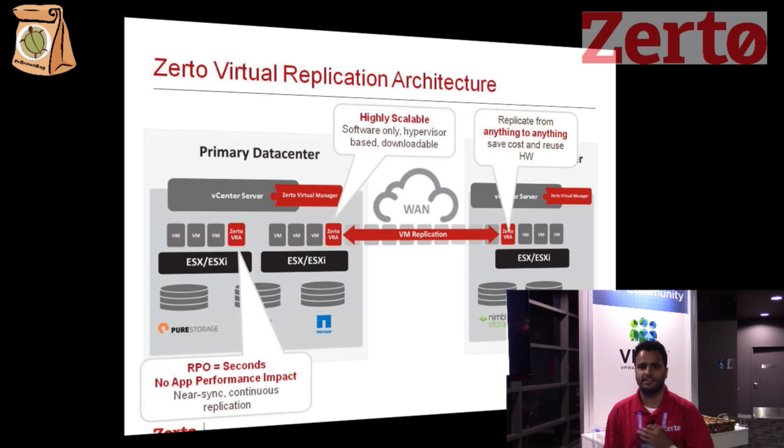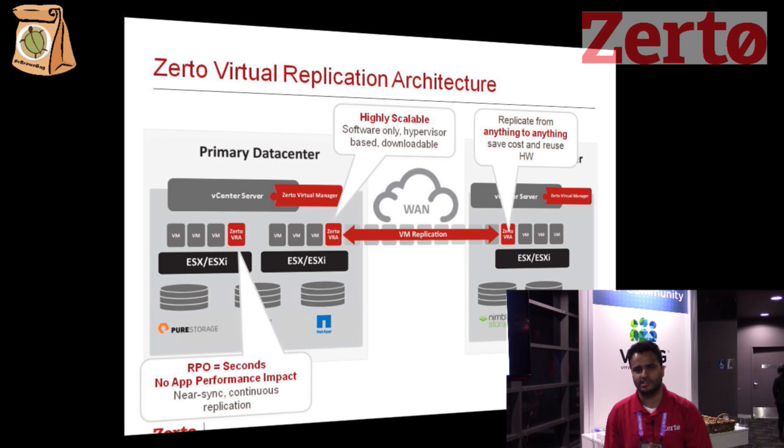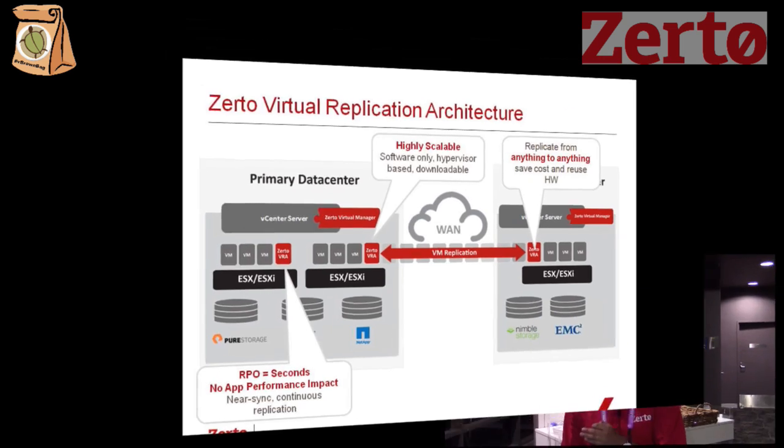One key thing to highlight is the recovery point objective. With Zerto, the RPO — the amount of data you stand to lose in a disaster — is reduced to literally single-digit seconds. Zerto is a near-sync continuous replication engine, writing changes as they occur in a compressed format to the DR site. Importantly, Zerto does not use snapshots, which avoids production impact. Instead, we use a journal of changes maintained at the DR site, giving you point-in-time recovery and a continuous data protection history of up to five days — configurable, of course. You can rewind and forward your application like a live TV.